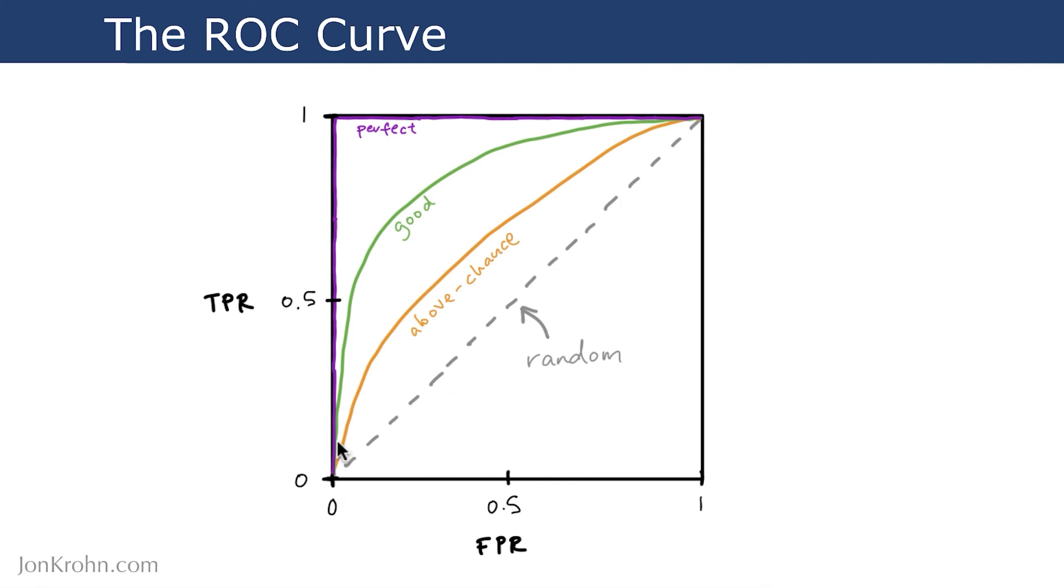If your algorithm is above chance, then it will cover more space than just 0.5. And the closer that the algorithm is to filling in the entire space, the better it's performing. If it manages to fill up 100% of the area under the curve, then it is performing perfectly. So at every single one of the thresholds, it is correctly classifying true positives and true negatives.